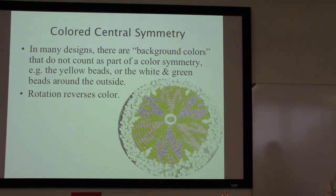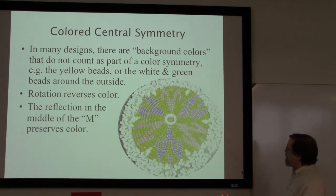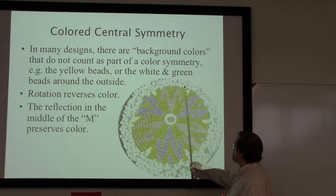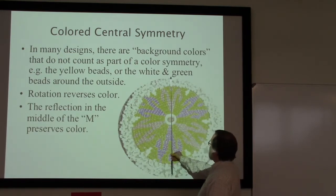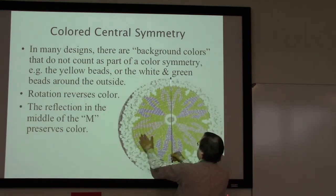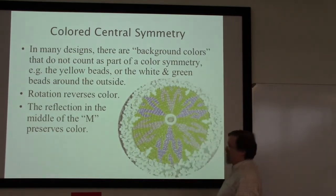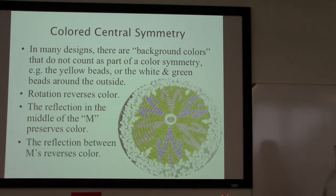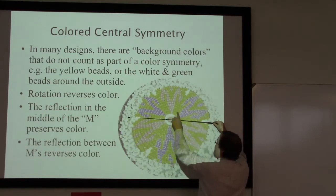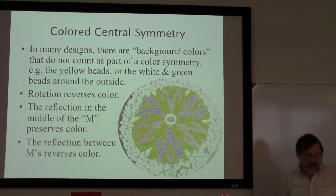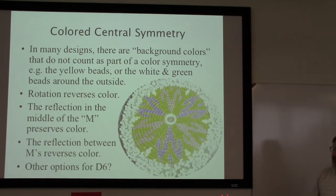Since this is a d6 there are two different kinds of reflections. One goes right down the middle of the motifs — the vertical reflection. This is a preserving symmetry: pink stays pink, blue goes to blue. But if I look at a reflection line that goes between the motifs — the horizontal symmetry is an example — then this is a color reversing symmetry: blue goes to pink, this blue goes to pink, and that blue goes to a pink. All of the colors are being completely reversed.